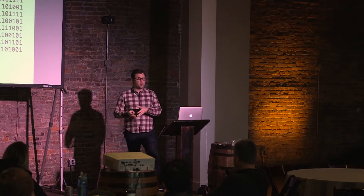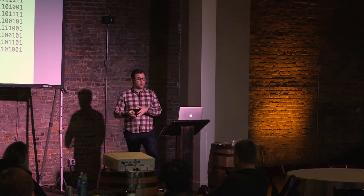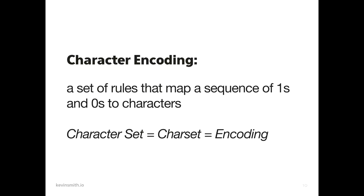On a solid state drive, it's an electrical charge that determines that. But at that base level, that's what computers are storing. The computer has a character set it uses to determine how to store that information. All a character set encoding is, is a set of rules that maps a sequence of ones and zeros to characters — just characters to ones and zeros and back again. It's just a mapping.